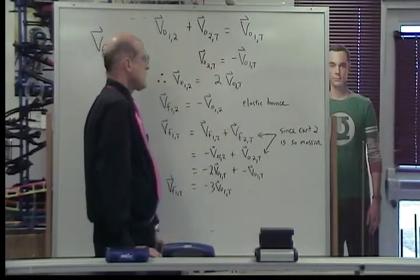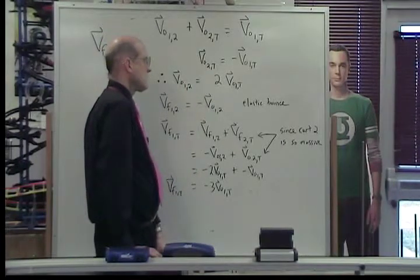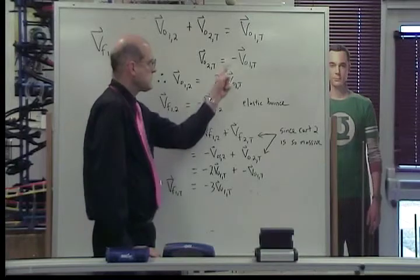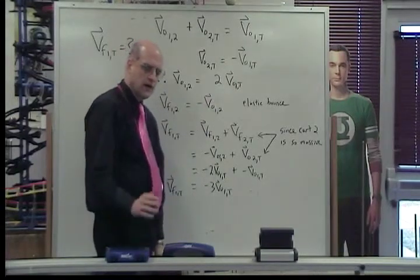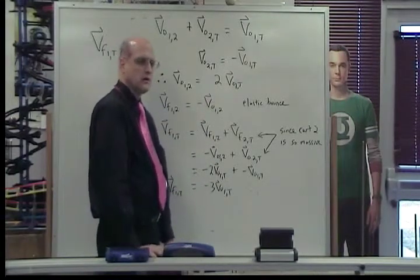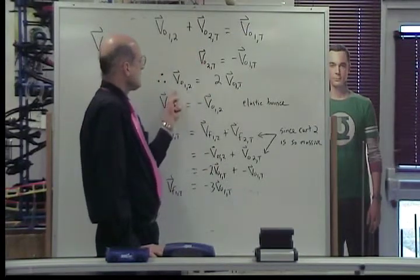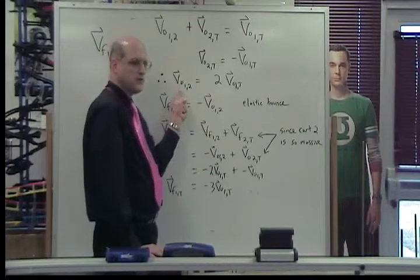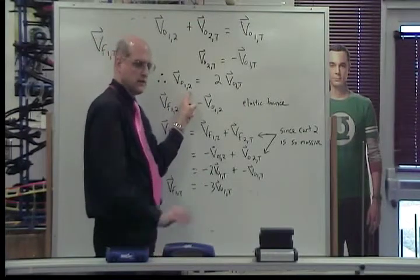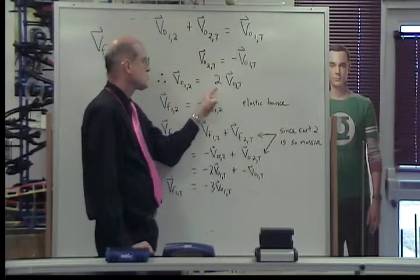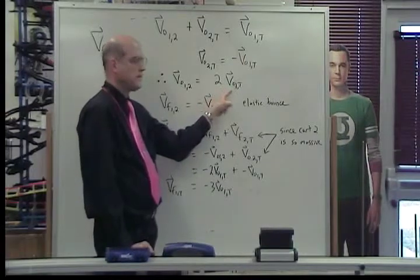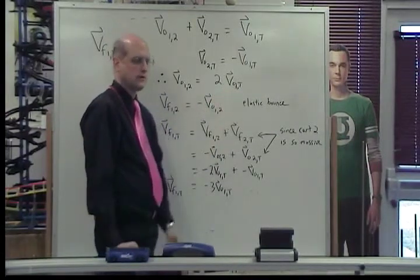Since the original velocity of card 2 relative to the track is equal to the negative of the original velocity of card 1 relative to the track, we conclude that the original velocity of card 1 relative to the track.